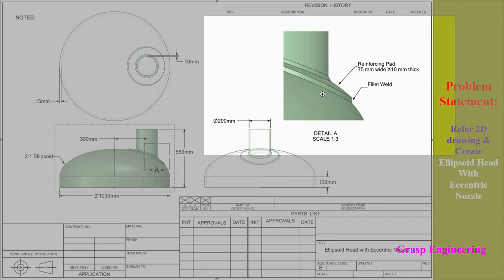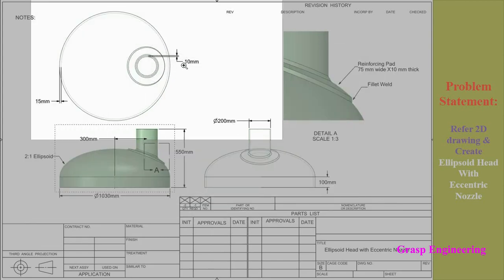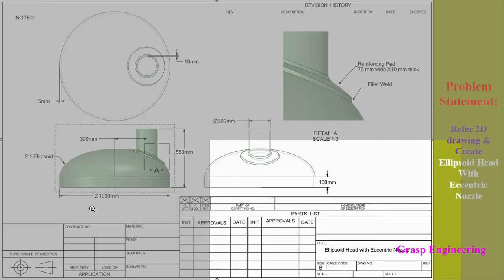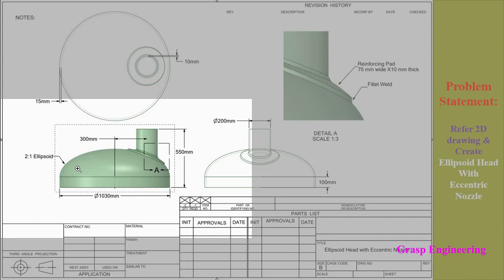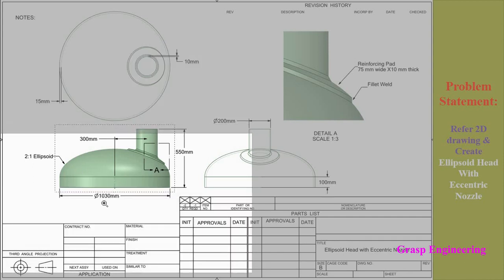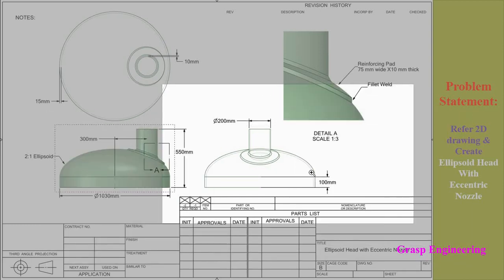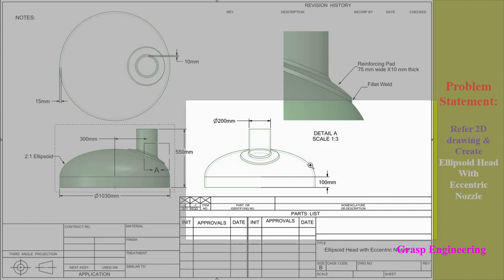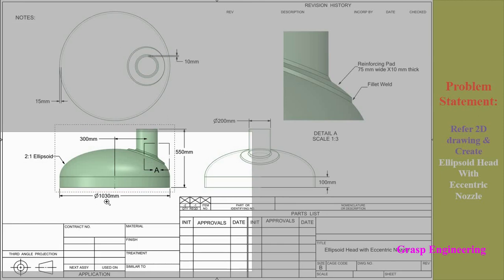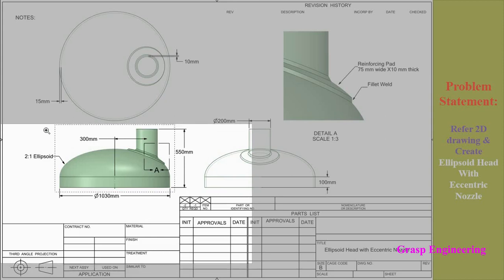You will find fillet welds at both joining ends of the reinforcing pad. This is your 2S21 ellipsoid which has an eccentric nozzle with a dimension of 200 mm diameter with 10 mm thickness. Here you can see the outer diameter of the shell. Up to this point you will find the ellipsoid, and then there is a 100 mm shell portion. We get an ID of 1000 mm and thickness of 15 mm.